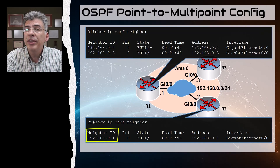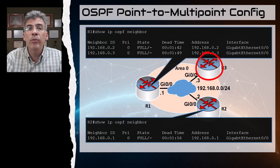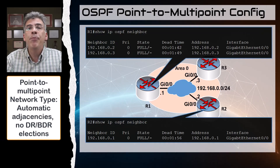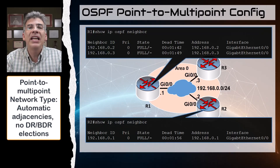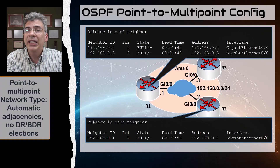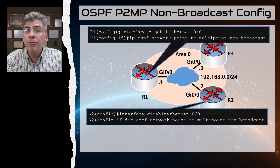We can see that R1 has automatically created adjacencies with R2 and R3 because point-to-multipoint supports multicast. We also see that there are no DR/BDR elections. If you look at R2, it has become a neighbor only with R1 — the hub — which is expected since that acts as a point-to-point link type. R3 shows something similar. This would be employed if you have a point-to-multipoint VPN or a DMVPN topology.